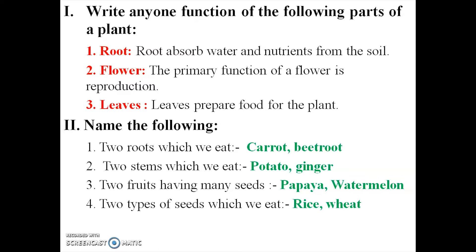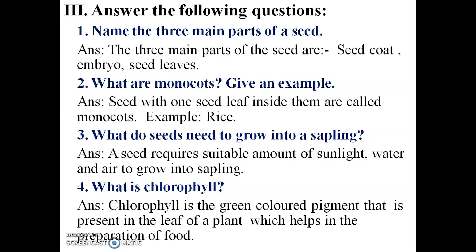The two types of seeds we eat are pulses and cereals. Here I mention rice and wheat. Spell the words: rice - R-I-C-E, wheat - W-H-E-A-T. Third Roman letter: answer the following questions. First question: name the three main parts of a seed.